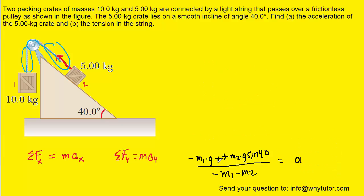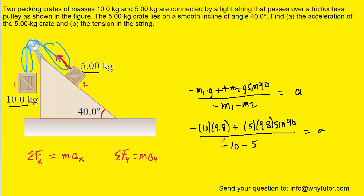Now we plug in the known values: M1 is 10 kilograms, M2 is 5 kilograms, and g is 9.8. After carefully crunching the numbers on a calculator, we get approximately 4.43 meters per second squared for the magnitude of the acceleration of both the 5-kilogram crate and the 10-kilogram crate. This is the answer to part a.